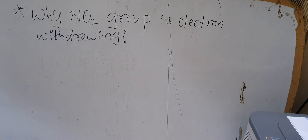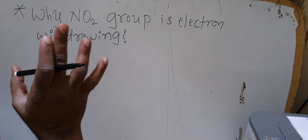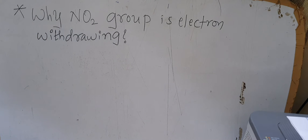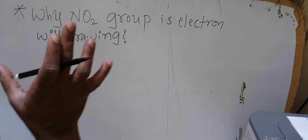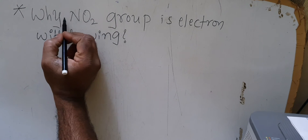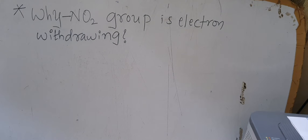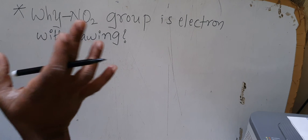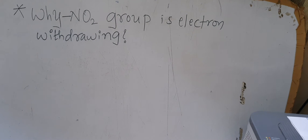In the next video I will be discussing what makes a group behave as an electron donating group. Now here we have the question: why is the nitro group electron withdrawing? I am going to explain the electron withdrawing nature of the nitro group. Since it is a group, I have to show a bond for the nitrogen atom, otherwise it becomes nitrogen dioxide.